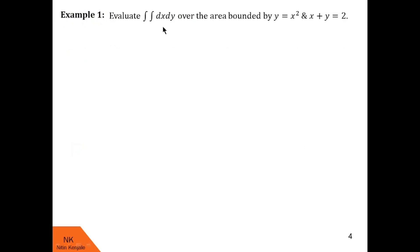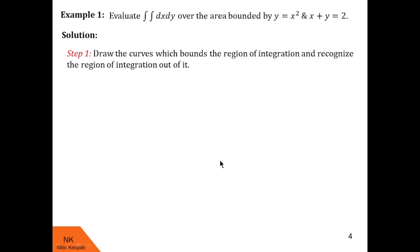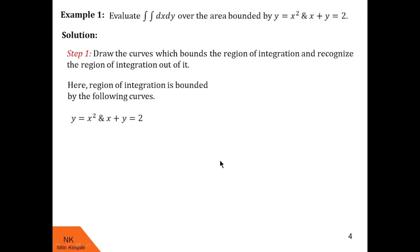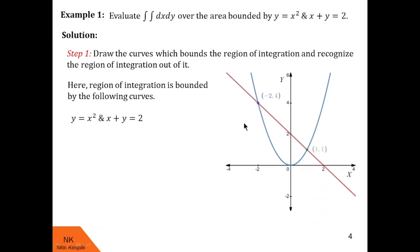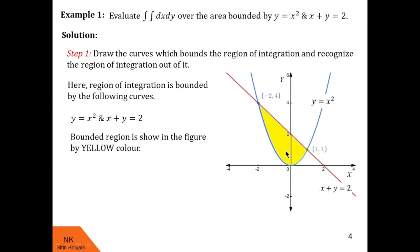In this first example, we are asked to evaluate the double integral of dx dy over the area bounded by curves y = x² and x + y = 2. In step 1, we draw the curves which bound the region of integration. y = x² is a parabola along the y-axis opening upwards, and x + y = 2 is a straight line. This is the parabola y = x² and this is the x + y = 2 line. Together they bound this region of integration shaded in yellow.